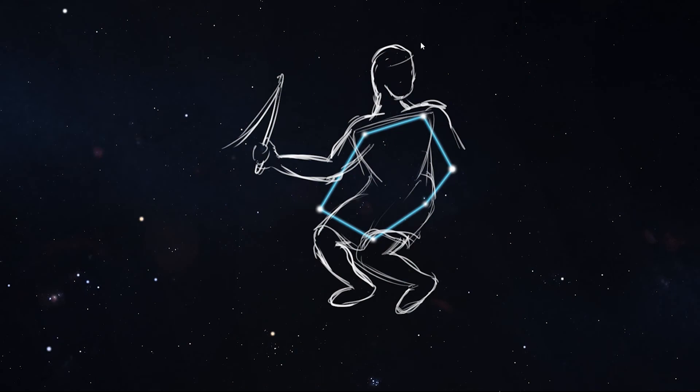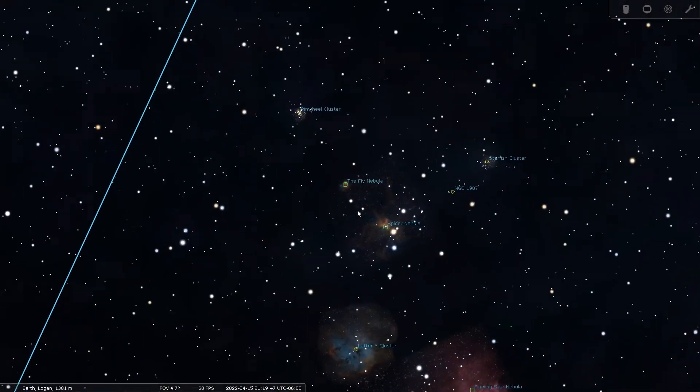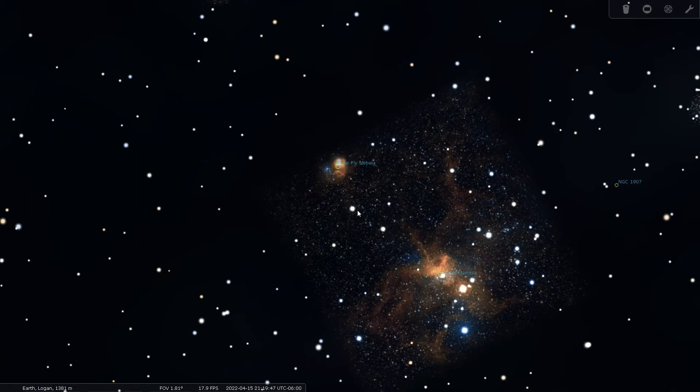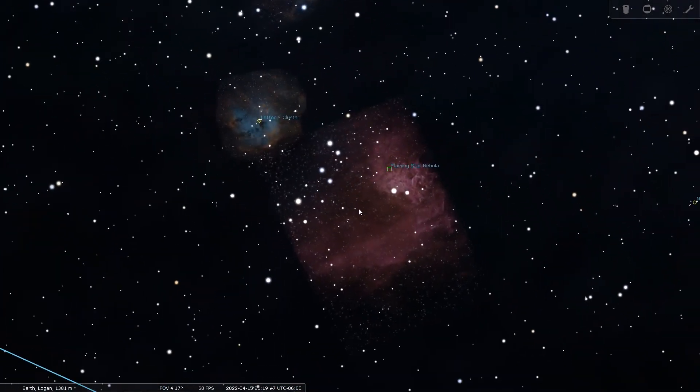Auriga is also home to the aptly named Spider Nebula and the nearby Fly Nebula. However, the brightest and most prominent nebula in Auriga is the Flaming Star Nebula, which is about 1,500 light years away and has a magnitude of about 6.